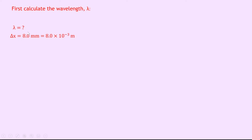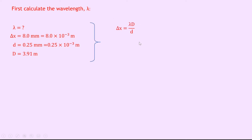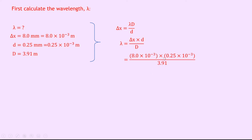The distance between adjacent bright fringes is 8.0 millimetres, which is 8.0 times 10 to the minus 3 metres. The double slit separation d is 0.25 millimetres, which is 0.25 times 10 to the minus 3 metres. The double slit to screen separation capital D is 3.91 metres. Using the equation delta x equals lambda d over D and rearranging for lambda gives delta x times D divided by d, which gives 8.0 times 10 to the minus 3 times 0.25 times 10 to the minus 3 divided by 3.91, giving 5.1 times 10 to the minus 7 metres.